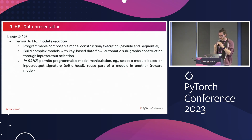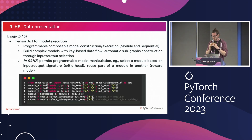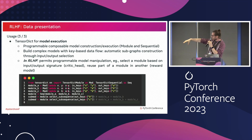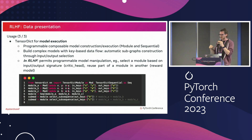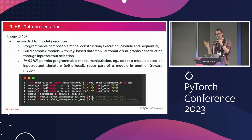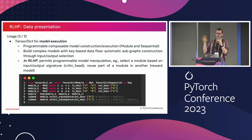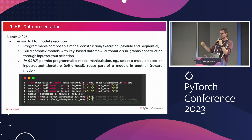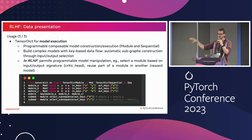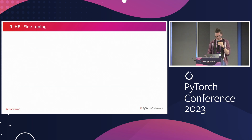The final thing about TensorDict is model execution. Here you have an example where I'm using a module called TensorDictModule to build my model programmatically. You can then very easily add one module to this model, remove one module, or just select part of the graph based on the input and output signature. So you can say here is my model with input A, B, C, and I would like to get just input A and output C — and it's going to remove all the layers that are not necessary to execute that model.